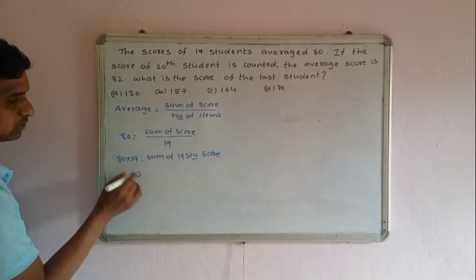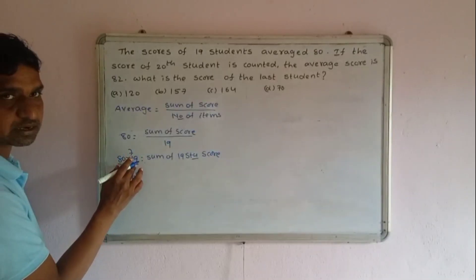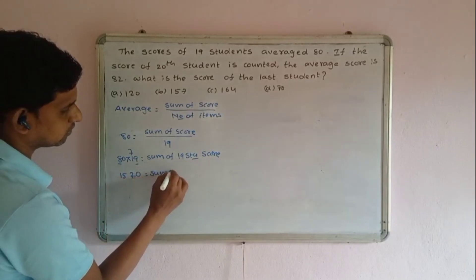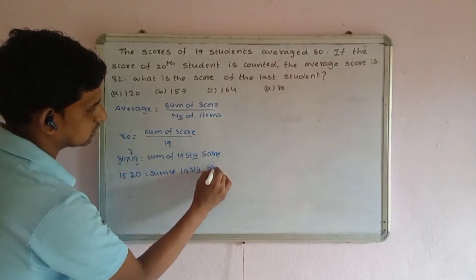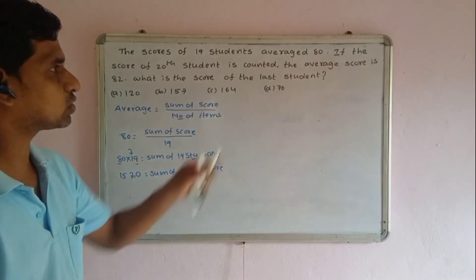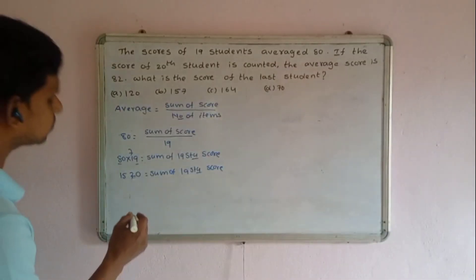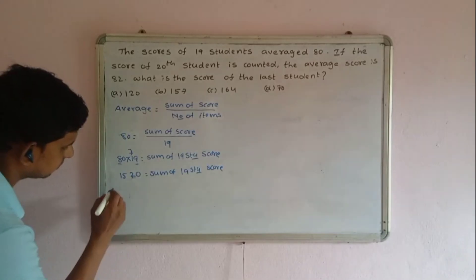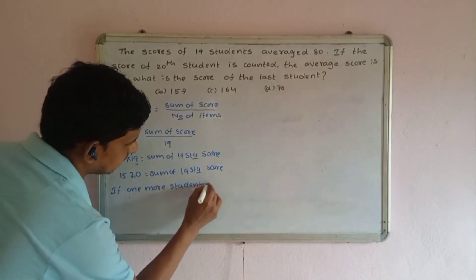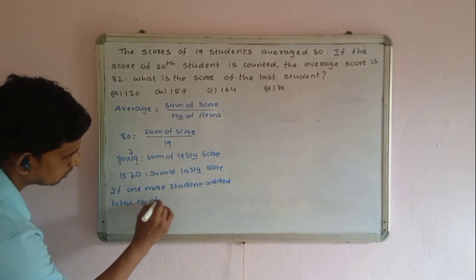Calculating: 80 into 19. So 8 plus 7 is 15, and working through the multiplication, the sum of 19 students' scores is 1520.